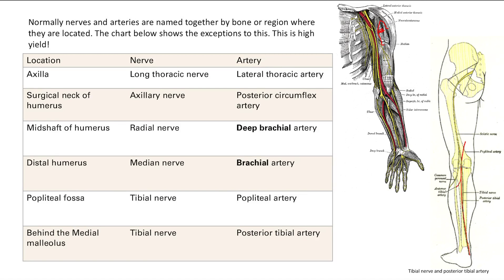Next is the midshaft. Remember how we injure our nerves — damage to the surgical neck was the axillary nerve, damage to the midshaft was the radial nerve. And the artery associated with that is the deep brachial artery.